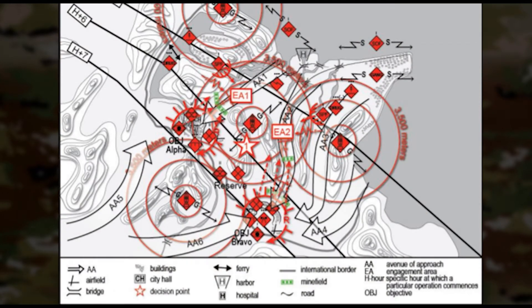To build threat COAs, a technique is to combine the threat template of current known locations from IPB Step 2, doctrinal array from the doctrinal template in Step 3, with the MCOO from IPB Step 2. By combining these documents, you look at the terrain within the AOE and apply threat characteristics, doctrine, and established patterns to adjust templated threat positions. This includes asking whether terrain becomes key for observation or entry into potential threat engagement areas, and whether avenues of approach benefit a desired end state due to mobility corridors or are made untenable by weather.